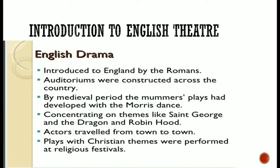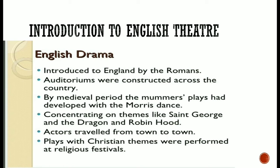English drama was introduced to England by the Romans; auditoriums were constructed across the country. By the medieval period, the mummers' plays had developed with the Morris dance, concentrating on themes like St. George and the Dragon and Robin Hood. Actors travelled from town to town and plays with Christian themes were performed at religious festivals. Drama has its origin in folk theatre, and when the Romans departed, their theatre departed with them. After that there were minstrels and people enjoyed their performances.